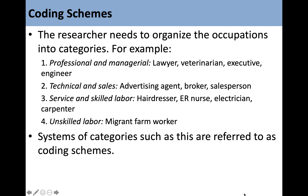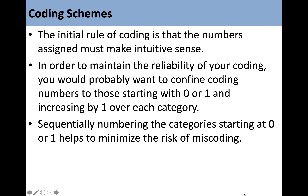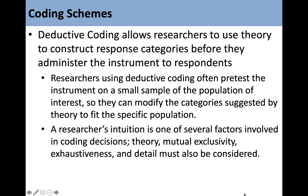The initial rule of coding is that the numbers assigned must make intuitive sense. In order to maintain reliability, you would want to confine coding numbers to those starting with zero or one and increasing by one over each category. Sequentially numbering categories starting at zero or one helps minimize the risk of miscoding. Deductive coding allows researchers to use theory to construct response categories before administering the instrument to respondents. A researcher's intuition, theory, mutual exclusivity, exhaustiveness, and detail must all be considered.